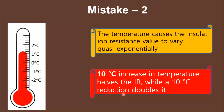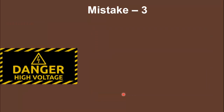Conversely, a 10°C reduction in temperature doubles the resistance value. This means whenever you perform a Megger test, you should also record the ambient temperature. The next time you test the same equipment, you must apply a temperature correction factor if the ambient temperatures differ — otherwise you will get a different resistance value on the same equipment and incorrectly judge the insulation condition.